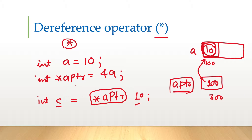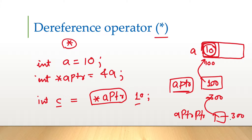We can do this for multiple level pointers as well. Like in the last video, we saw a pointer to a pointer — this is pointing to this pointer, which in turn points to the original variable. This will store address 300, so once we dereference it, the value will become 100 because it goes to the value stored at that address. And once again if we dereference it, it will go to address 100 and fetch 10.